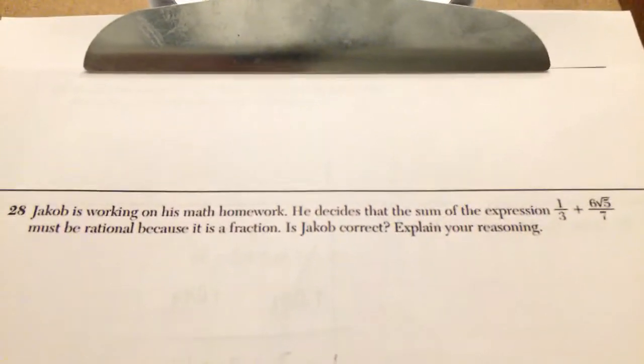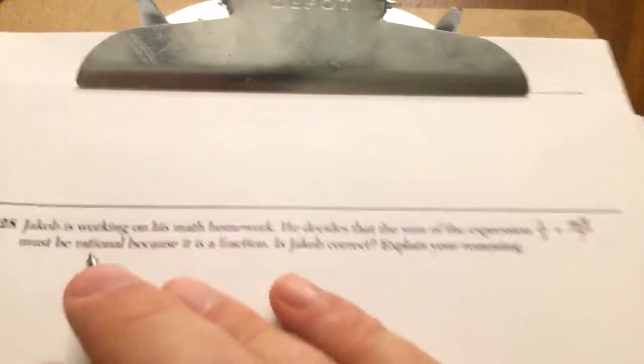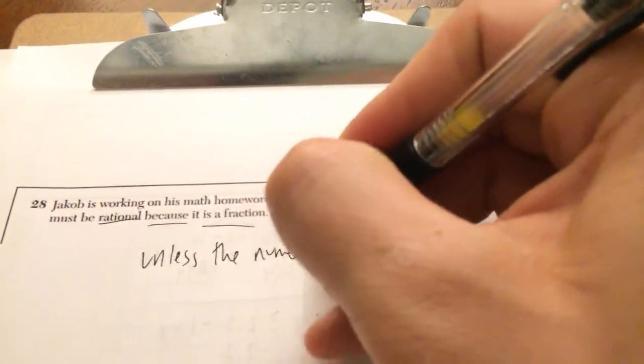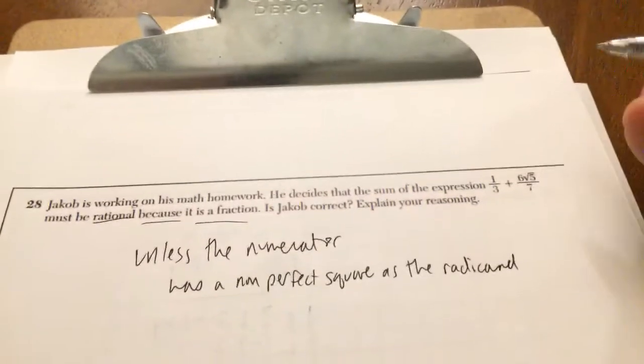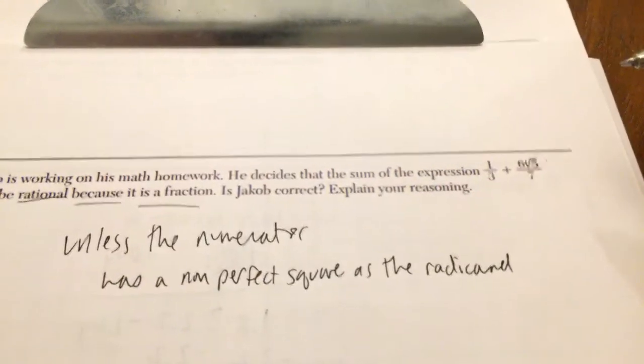Jacob is working on his math homework. He decides the sum of the expressions 1 third plus 6 square root of 5 over 7 must be rational because it's a fraction. This is what us teachers tell you. Hey, if it's a fraction, it's rational. Unless the numerator has a non-perfect square as the radicand.